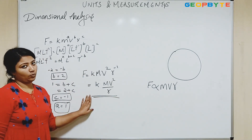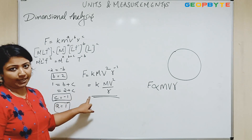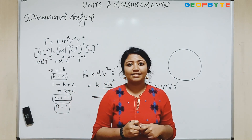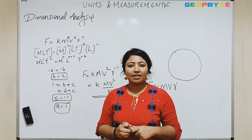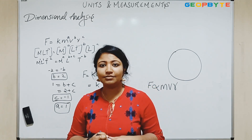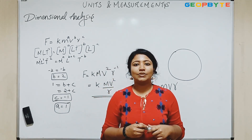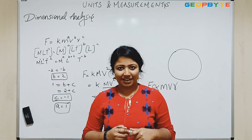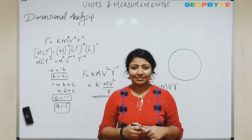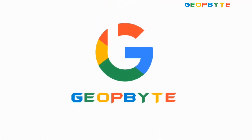So we could derive the equation F equals K M V squared by R. That's it, guys. So if you have any doubt, please do comment in the comment section. And if you like this video, please do like, share, and subscribe. Stay tuned and thanks for watching.